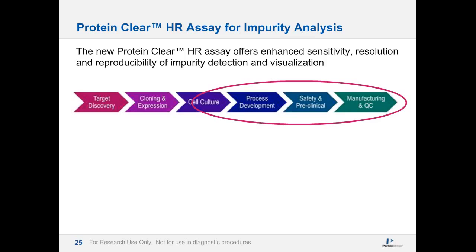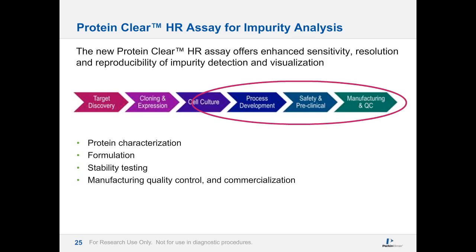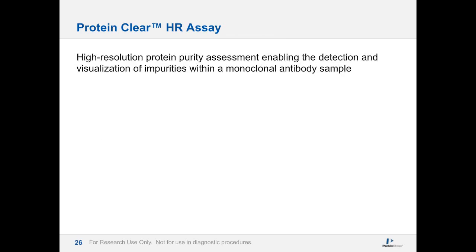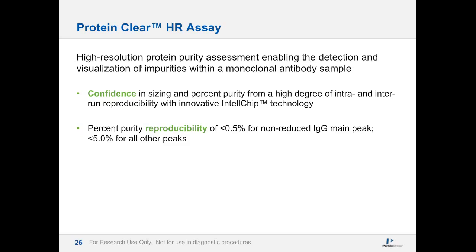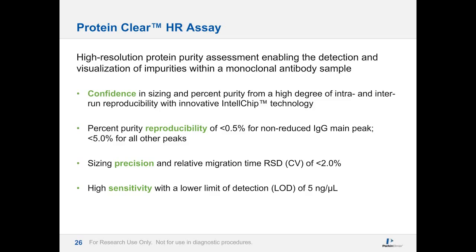Now I'll talk more about the newest member of the protein portfolio, the Protein Clear assay. The main message is that the Protein Clear HR assay offers enhanced sensitivity, resolution, and reproducibility for impurity detection and visualization. It is mainly used in process development, safety and preclinical, and manufacturing and QC. It can be used for characterization, formulation, stability testing, and quality control. It enables the detection and visualization of impurities for monoclonal antibody samples, and allows confidence in sizing and percent purity with a high degree of intra- and inter-run reproducibility using IntelliChip technology.